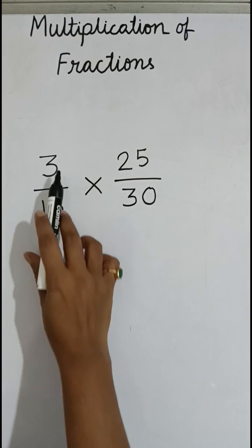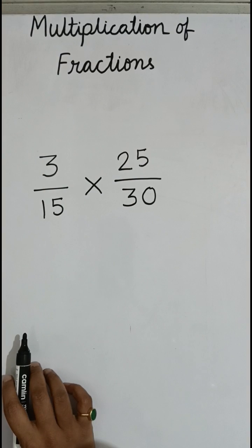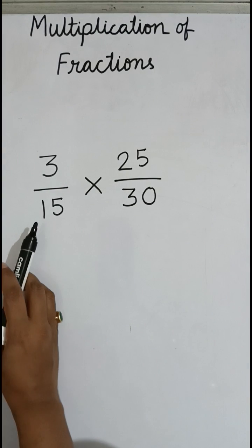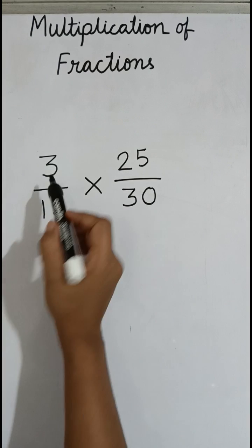Any numerator can be cut with any denominator. So let's start doing this cutting part. We look at 3 by 15. Both numbers come in which table? 3's table. So we can cut both the numbers by a common number, which is 3.